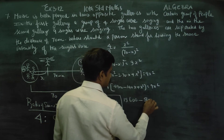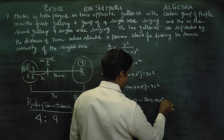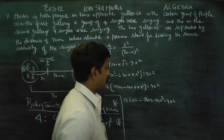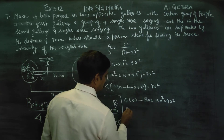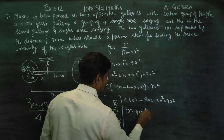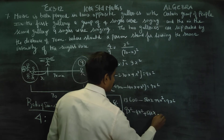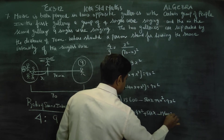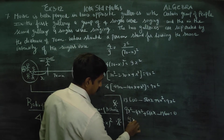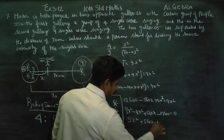Expanding: 19600 minus 560x plus 4x squared is equal to 9x squared. Rearranging: 5x squared plus 560x minus 9600 equals 0.